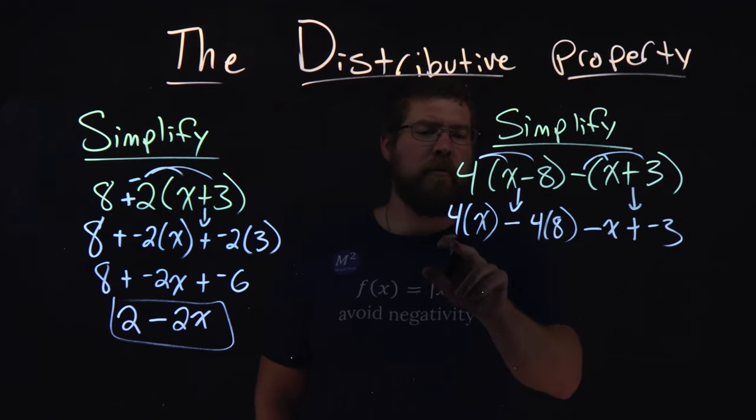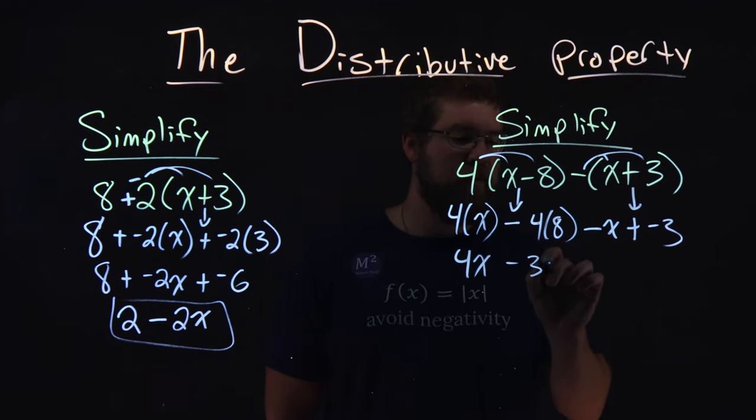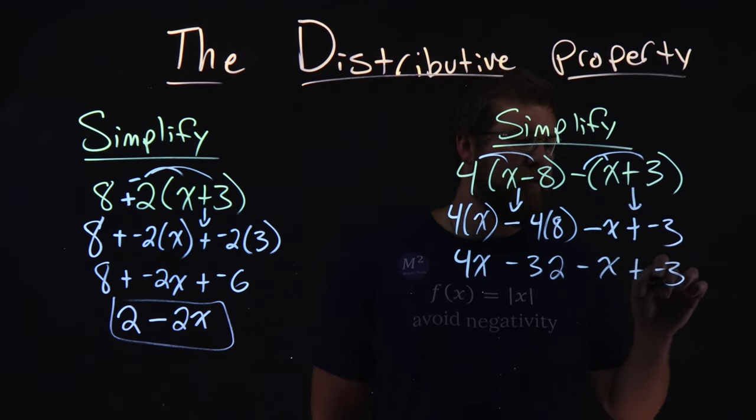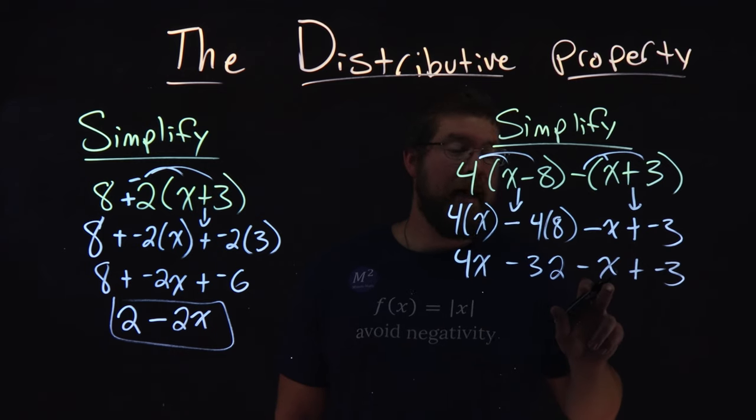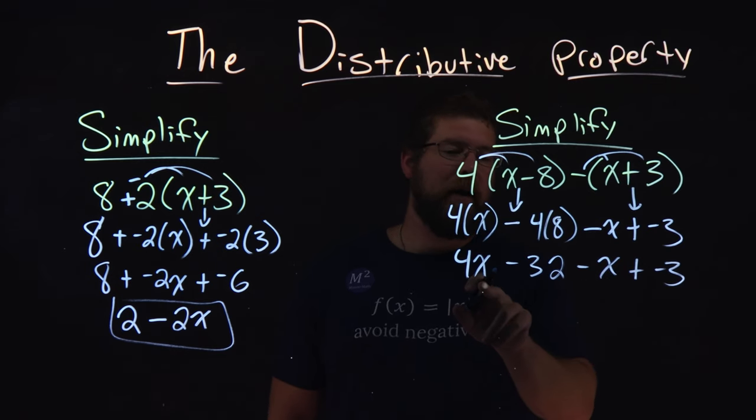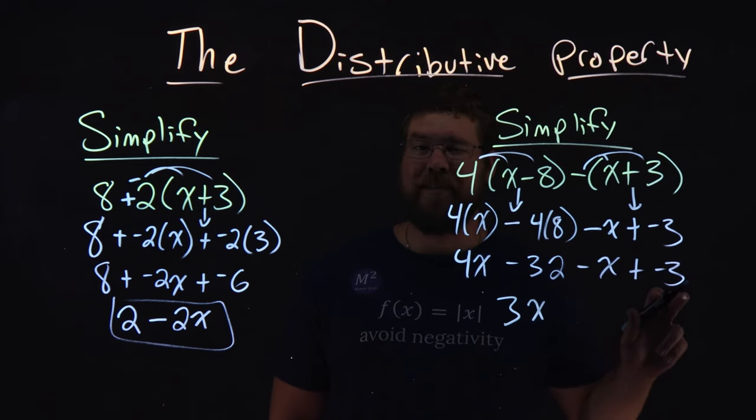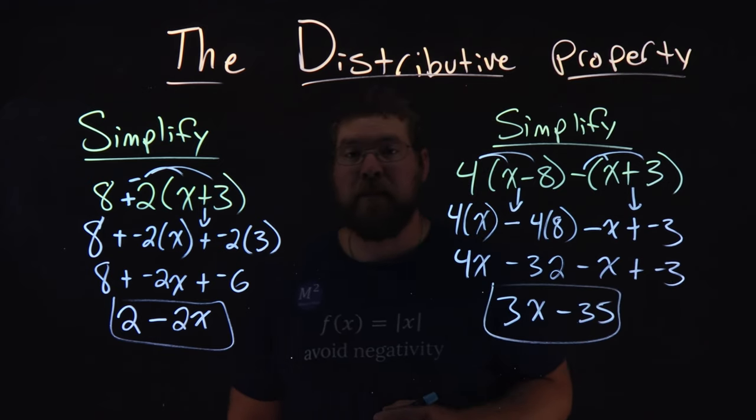Now let's simplify. 4 times x is 4x, and 4 times 8 is 32, so minus 32. Then we have minus x and plus negative 3. Now combine like terms. 4x and negative x are like terms. 4x minus 1x is 3x. Negative 32 plus negative 3 is negative 35. This simplifies to be 3x minus 35.